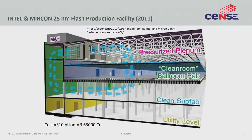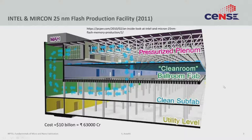All of this air handling and architecture come at a significant cost. The typical cost of a modern fab is on the order of 10 billion dollars — a few billion above or below — which translates to around 70,000 crore rupees. That is a significant investment. What I want you to appreciate is why we are willing to make such a significant investment for something that we use as a matter of course, like a cell phone that is relatively cheap — behind that cheap chip is a significant infrastructure investment.